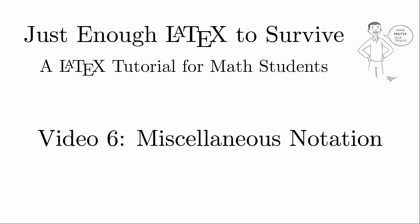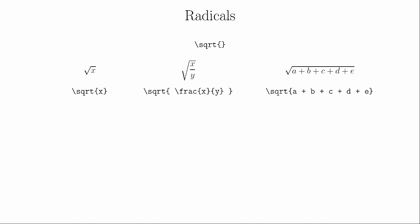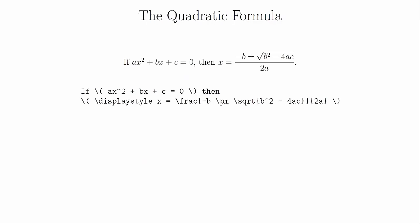In this last video on mathematical notation, we're going to pick up some random bits that just didn't fit well into the other videos. We'll start with a simple symbol that we probably could have introduced somewhere earlier: the square root symbol. Using \sqrt will create a square root symbol over everything inside the brackets. The radical will resize itself automatically. This also takes an optional argument to create an nth root, which you put in square brackets before the curly brackets.